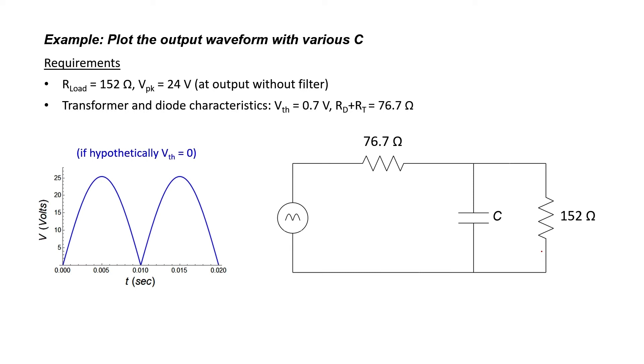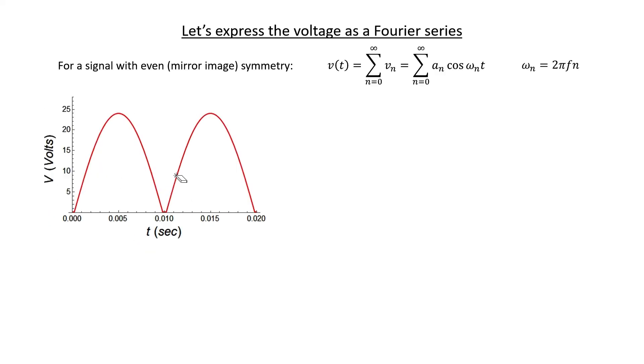This is what our model looks like. And here at the input side, we effectively have a rectified signal. This is what it would look like if the diodes didn't have any turn-on voltage at all. But we know that they have a 0.7 volt turn-on voltage. Therefore, it's flat at the bottom a little bit. This peak is 24 volts.